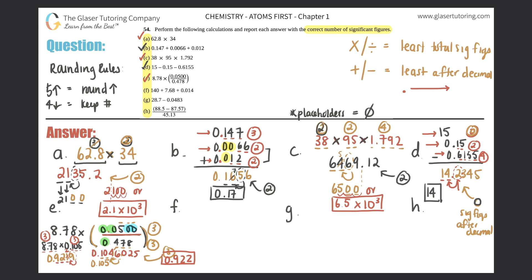Back to addition for letter f. Stack them up: 140, then 7.68 with decimals aligned, then 0.014. Add them all first, then round. 140 plus 7.68 plus 0.014 gives 147.694. Now check sig figs to the right of the decimal for 140 — there's no decimal shown, so that's zero. When one number gives zero, that will always be the answer for addition and subtraction.